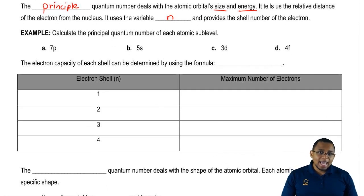In the first one, a, 7p, the number that's in front of p is a 7. All we would say here is that n equals 7. It's as simple as that.